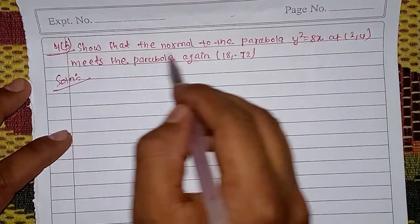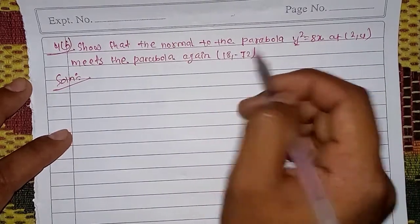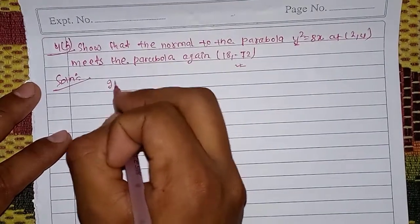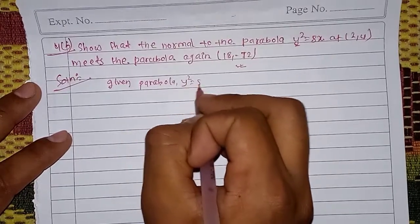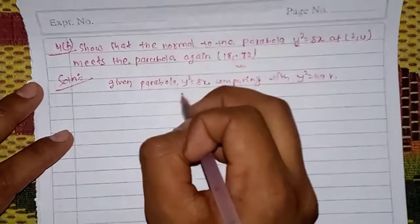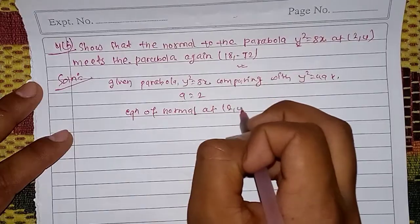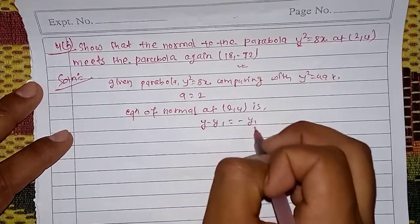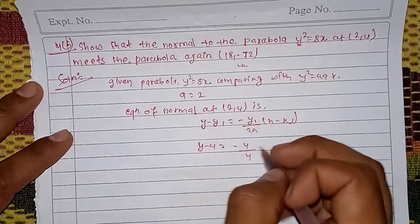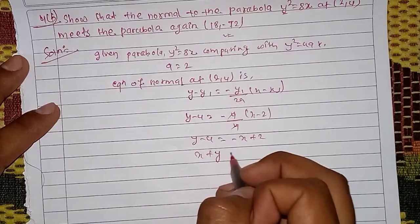The next problem: find the normal to the parabola y²=8x at the point (2,4). The equation of the normal at (x₁,y₁) is y - y₁ = -y₁/(2a) · (x - x₁). So y - 4 = -4/(4) · (x - 2), giving y - 4 = -(x - 2), so x + y - 6 = 0.